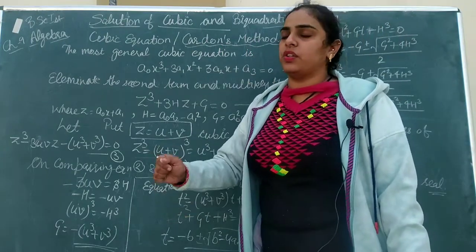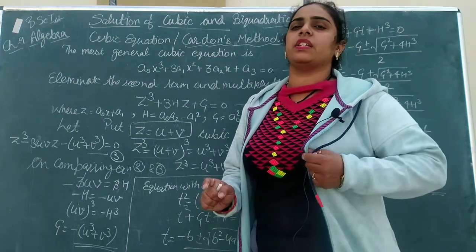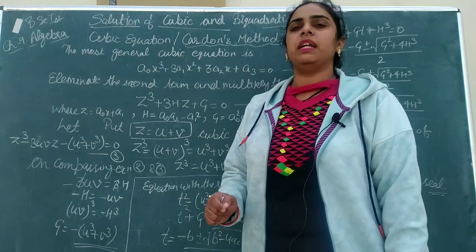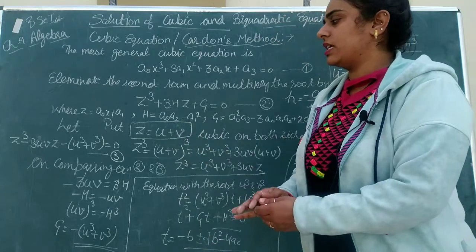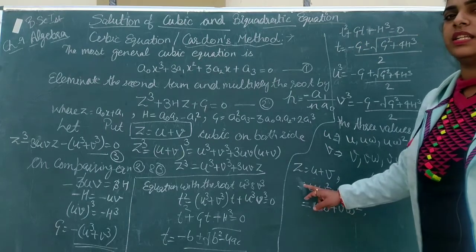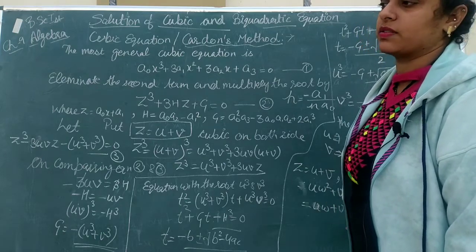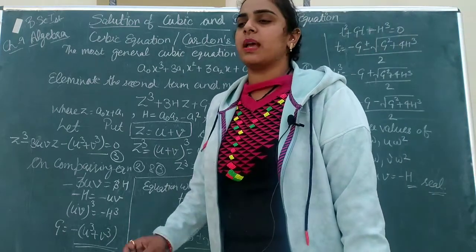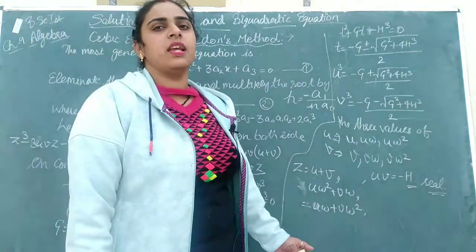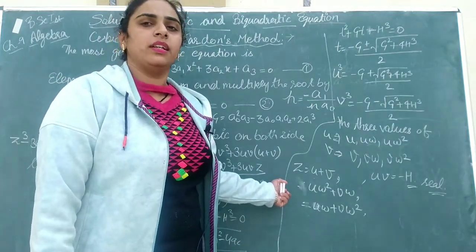To summarize: for solving a cubic equation, there is one method — Cardano's method. For solving a bi-quadratic equation, there are two methods: Descartes' method and Ferrari's method, which will be discussed in the next video. By Cardano's method, the three roots are Z = U+V, Uω²+Vω, and Uω+Vω². The nature of the roots and an example based on Cardano's method will be discussed in the next video. Thank you.